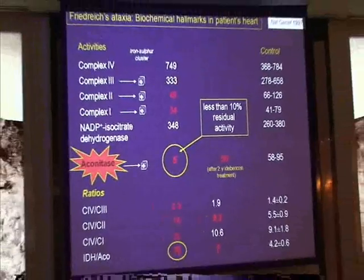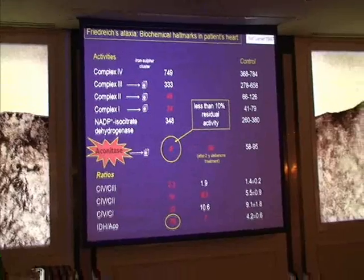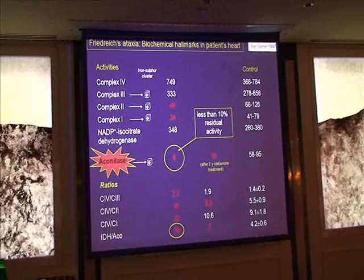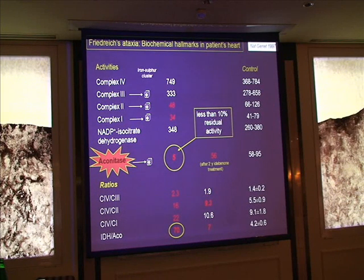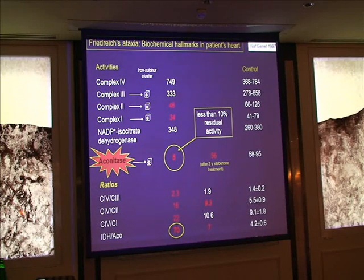As most of you know, the very first description made on a patient sample with low frataxin was a profound and severe defect in iron-sulfur cluster proteins. We did that more than 10 years ago on the sample of a young lady. It was the very first biochemical marker for Friedreich's ataxia.